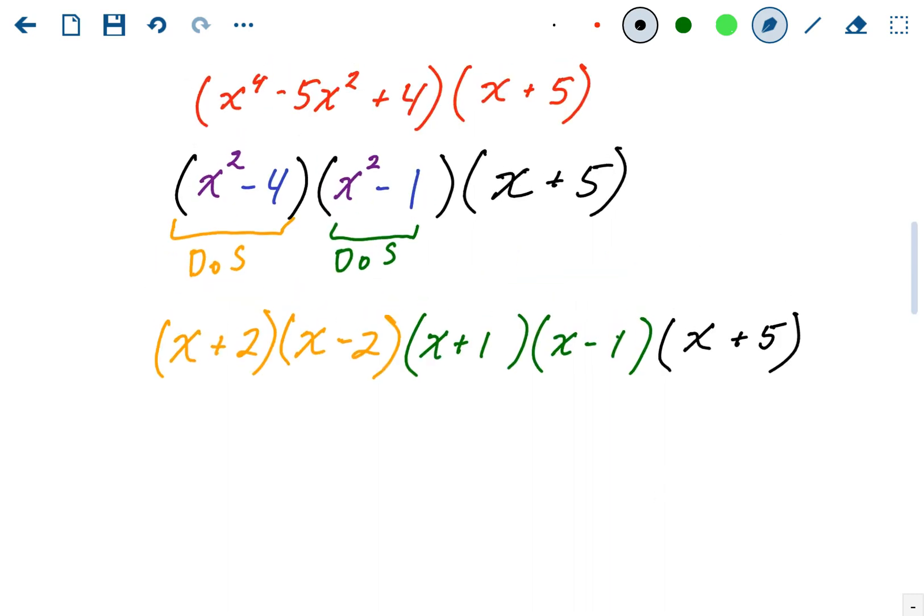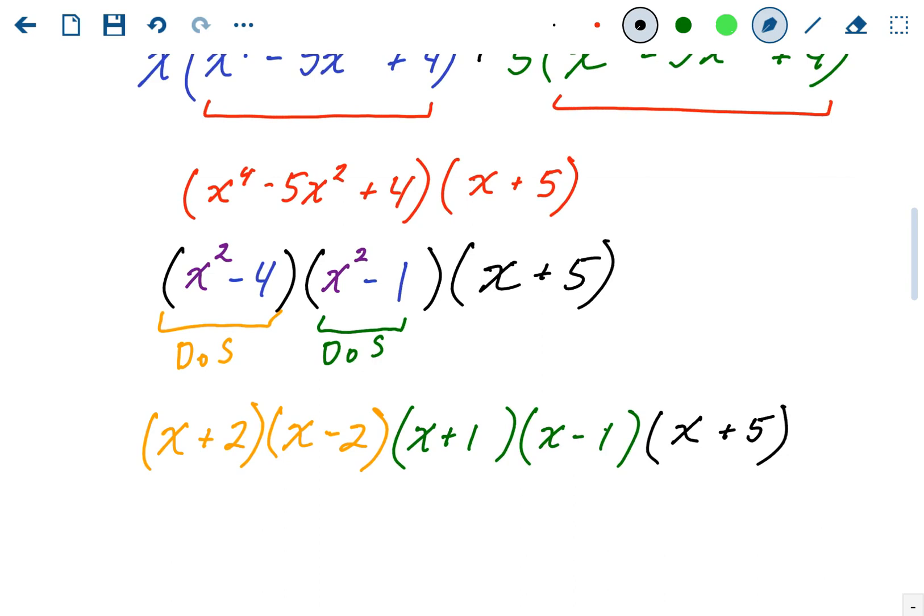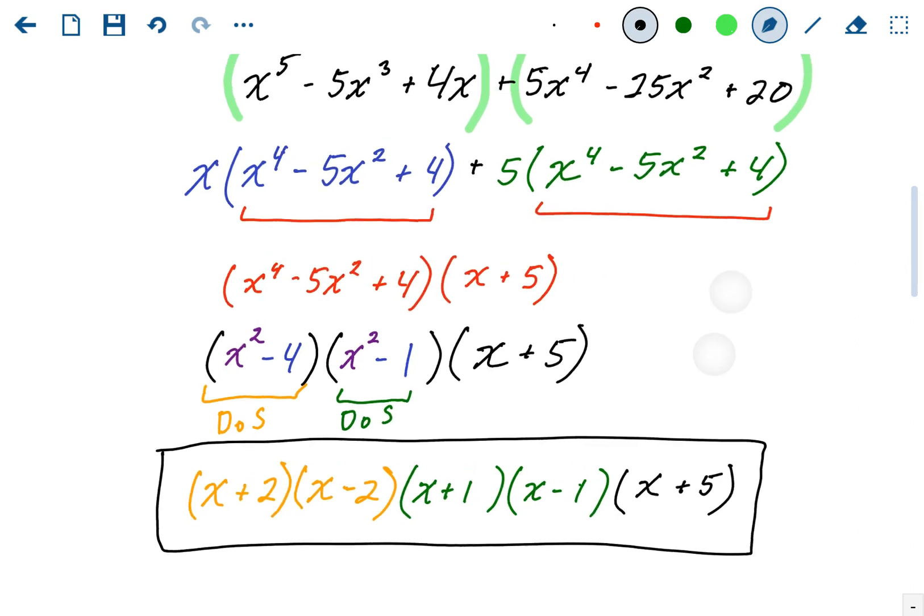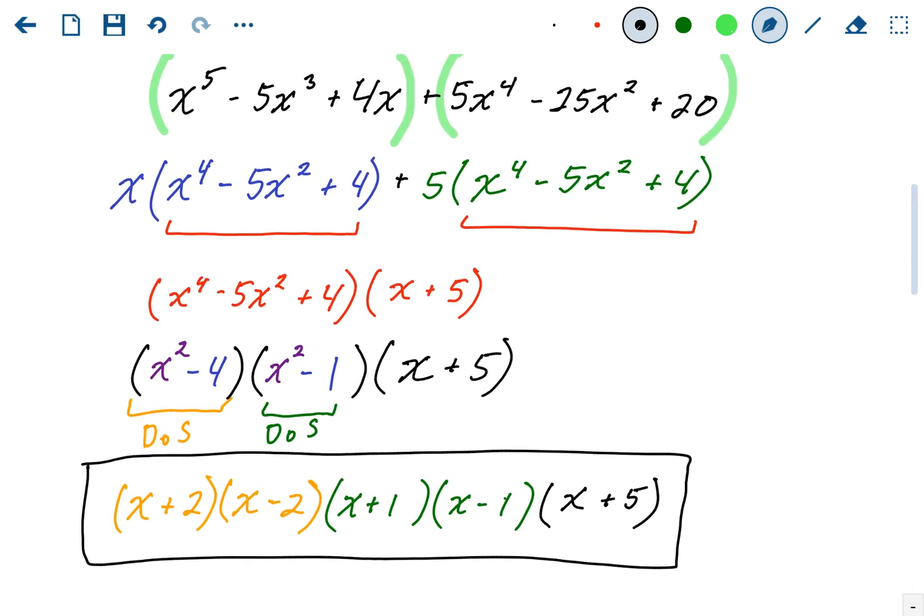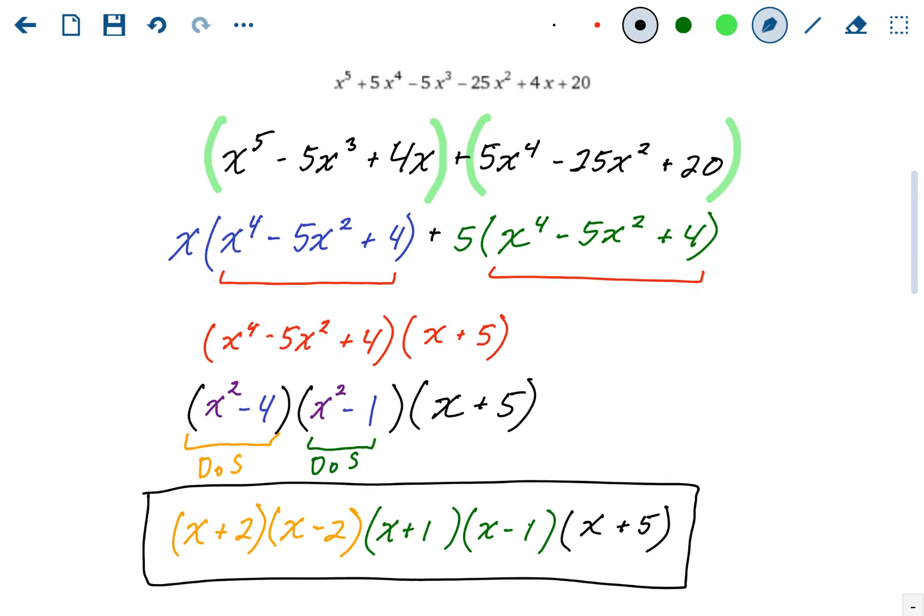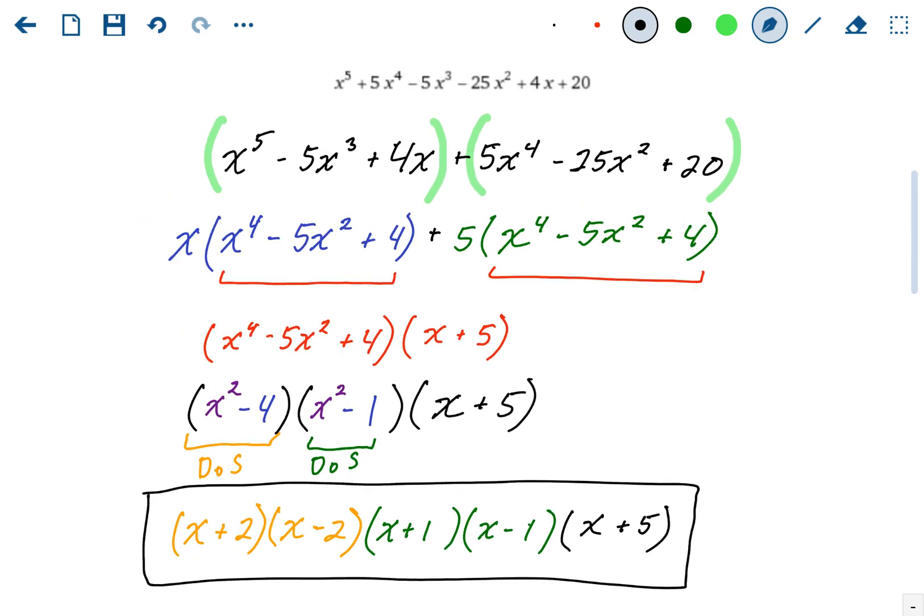That's fully factored. You have five linear binomials. There's nothing else to do with this. So again, factor by grouping is a little more versatile than we thought. You could do it with six terms in this case. Now again, that's not an Algebra 1 problem. I would never give that to my Algebra 1 class. But it's the same tools we learn in Algebra 1, just apply to a more difficult problem.